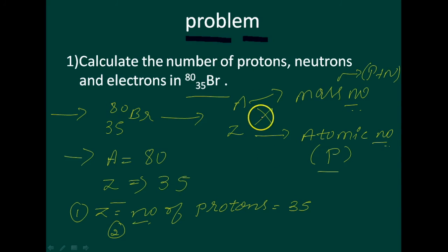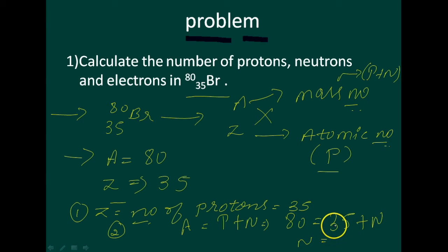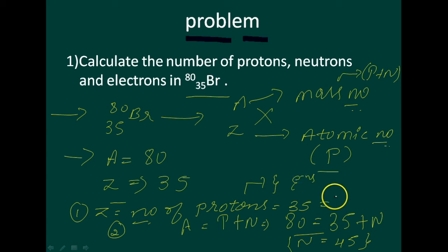To find neutrons: A = protons + neutrons, so 80 = 35 + neutrons, giving neutrons = 80 − 35 = 45. So the number of neutrons is 45, protons is 35, and electrons is 35.